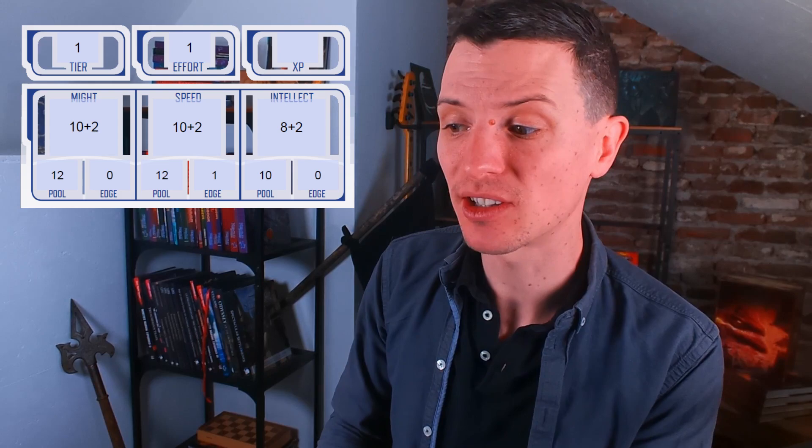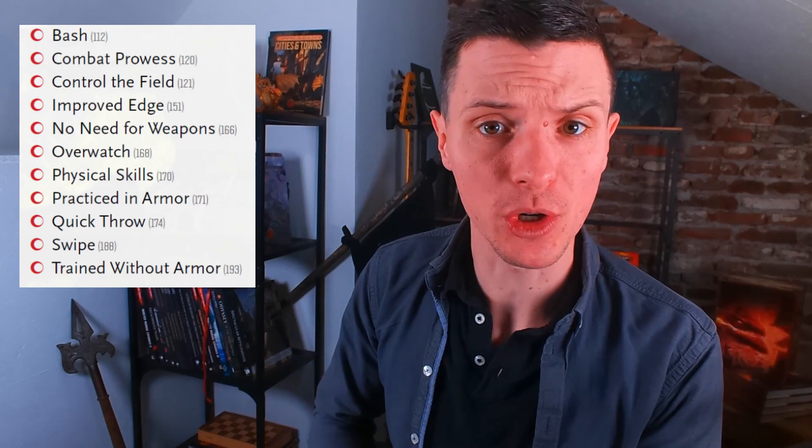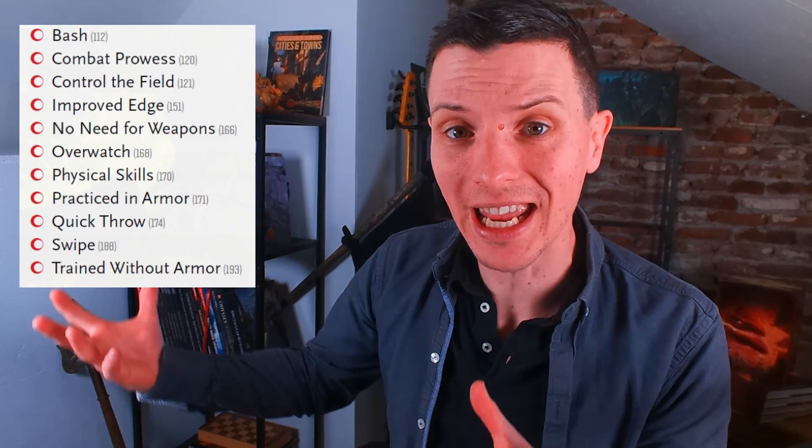All we need to do now is fill in our character sheet, starting with the type. Most information can be found with your type. A tier one warrior like Juicy Jane has an effort level of one. She has 10 might, 10 speed, and 8 intellect, and she can divide six more points among those as she pleases. I've chosen to put two in each stat to round her out and make her somewhat more clever, because she would rather be reading — so now she has a pool of 12 might, 12 speed, and 10 intellect. A warrior can also choose to have one edge in either speed or might; I chose speed to make her more agile. Then there is a list of powers and a warrior can choose four: I went with bash, trained without armor, quick throw, and swipe.